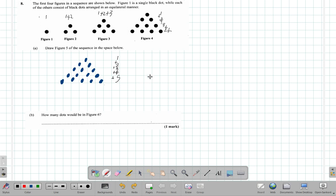So how many dots would be in figure 6? I would expect 1 plus 2 plus 3 plus 4 plus 5 plus 6. So what is that equal to? 6 and 5, that's 11. 11 and 4, 15, and 3, 16, 17, 18, 19, 20, 21. 21 dots.